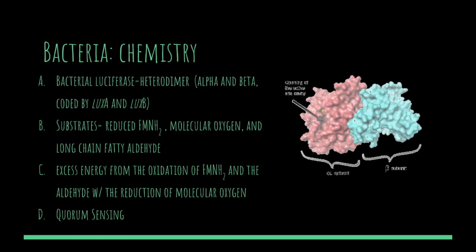By this system, bacteria sense when a sufficient concentration has been reached based on autoinducer accumulation, so that bioluminescence only occurs when nutrients are sufficient and the environment is favorable. Although bacteria are among the most seemingly simple organisms, they have an efficient system of both light production and gene regulation that allows them to use bioluminescence advantageously for their survival.